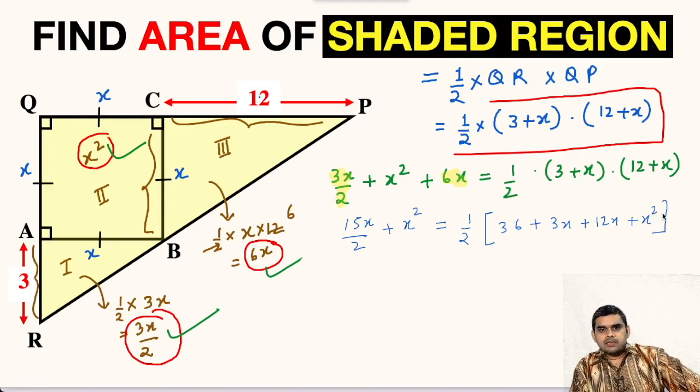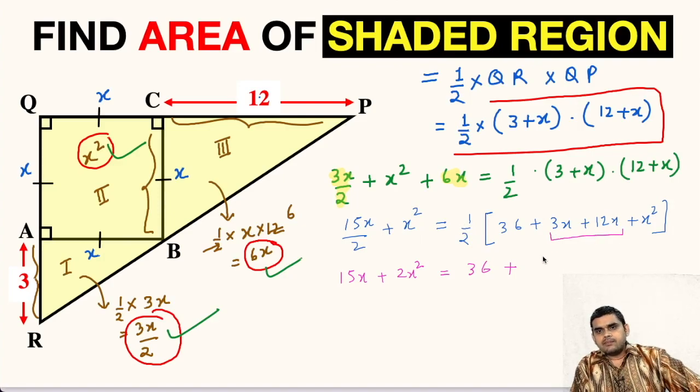Now we will multiply both sides by 2. This will give us 15X plus 2X square equals, here half will get cancelled when we multiply 2 on right hand side. We will get 36 plus these two terms will combine and give us 15X plus X square.